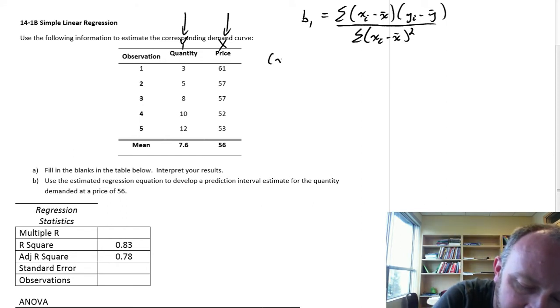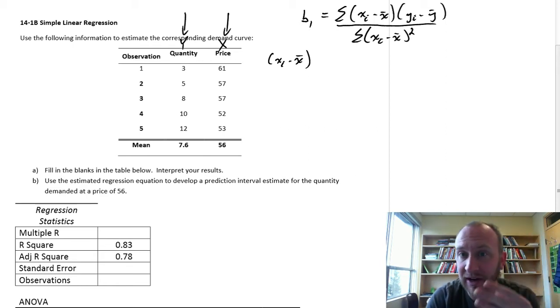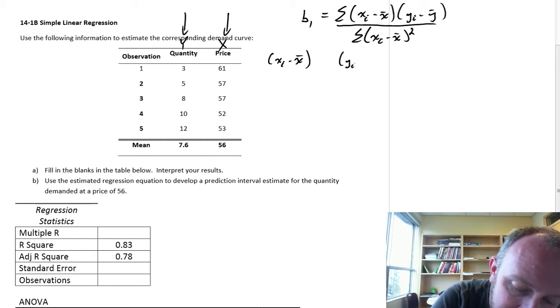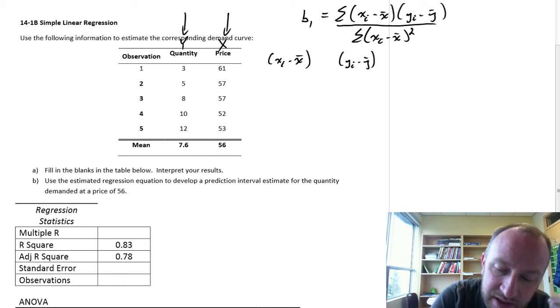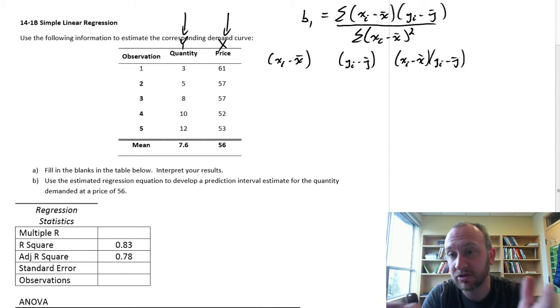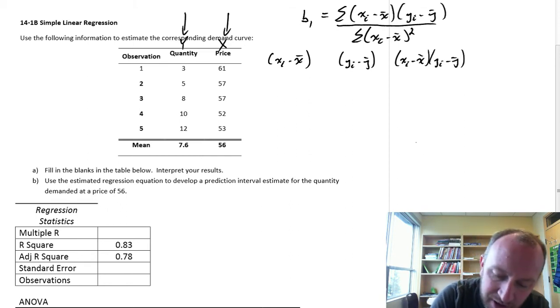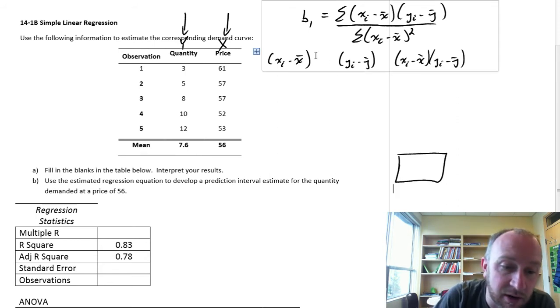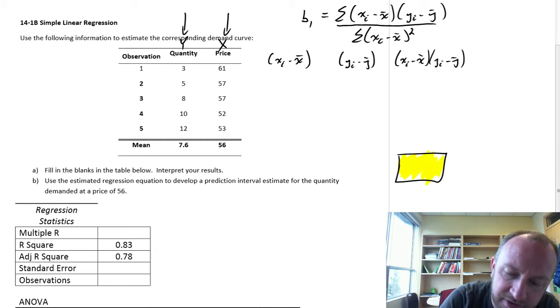I'll have one column of differences between x values and x bar, we'll do the same for the y values, then multiply those together. We'll have a column of the product of those first two columns, then add all of those up, and that will be our numerator value.